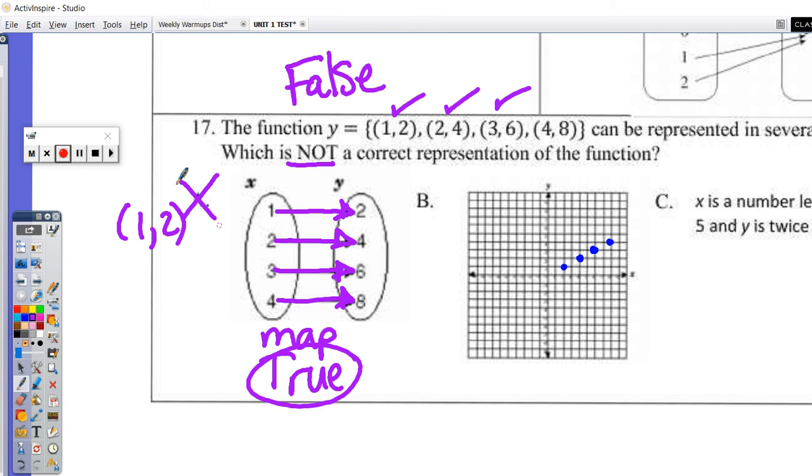Let's look at letter C. X is a number less than 5. Are my x-values all less than 5? That part is true, but we need to test the Y value. Let's see what it says about the Y. The Y is twice the value of X. Is this number here 2 times the value of the X? Yes. Is 4, 2 times the value of 2? Yes. Is 6, 2 times the value of 3? Yes. 8 is 2 times the value of 4. Yes. This is true.